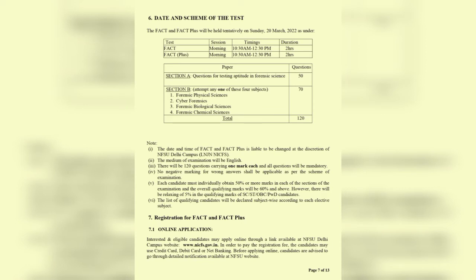The exam timing is 10:30 to 12:30 — a two-hour exam with 120 questions. 50 questions will be general forensic science questions from any field (ballistics, toxicology, QD, etc.), and 70 questions will be from your chosen specialization. Every question carries one mark. There is no negative marking. To clear the exam, you must score above 50%, i.e., 60 or more out of 120. The cut-off beyond that will be released with the result.